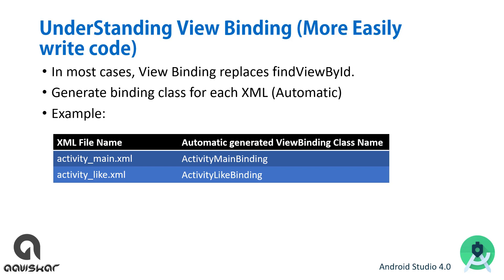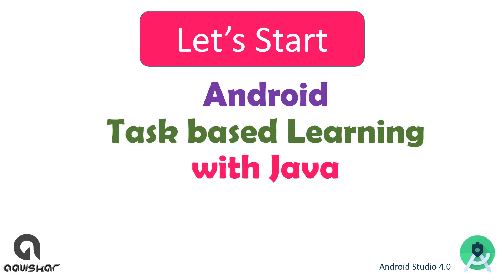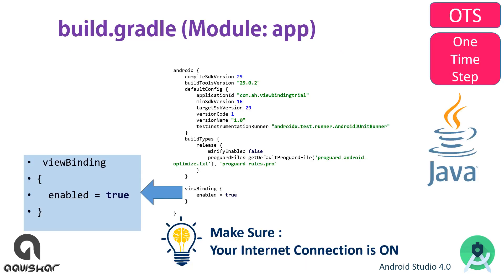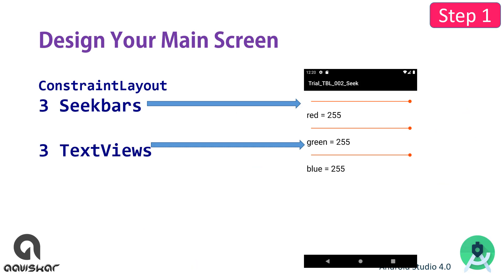Let us start Android task-based learning with Java. Create a new project with an empty activity inside Android Studio 4.0. It is a one-time task where you have to write view binding enabled equals to true. Make sure your internet connection is on, then design the main screen.